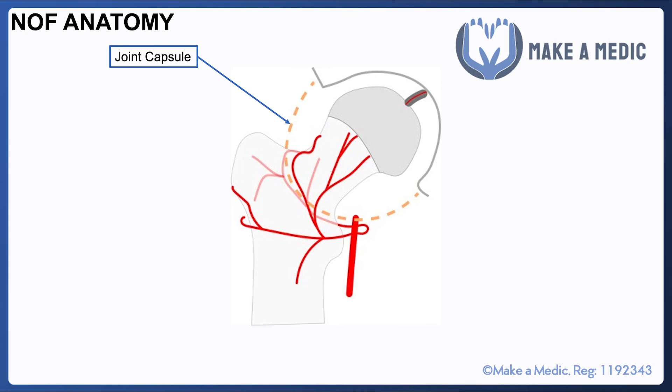In general, if a fracture has happened within the joint capsule, we tend to associate that with a high risk of the blood supply being compromised because all of these retinacular vessels get sheared. If the fracture is outside the joint capsule and a little bit further down the femur, then there is less of a risk of the blood supply being compromised. That's another key point to bear in mind about neck of femur anatomy.